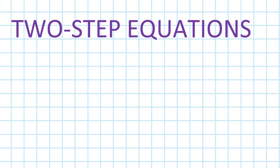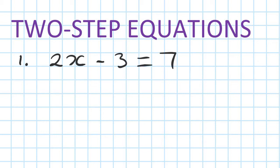Two-step equations. Let's say number one: 2x minus 3 is equal to 7. Now if you think about it, something take away 3 equals 7, so it must be 10. So 2 times something is equal to 10, so it must be 5 — 2 times 5 is 10, so x is 5. But I want to show you the process so that for every question you just follow the process.